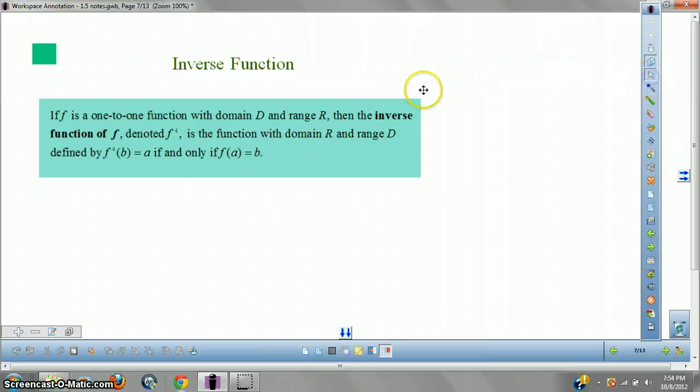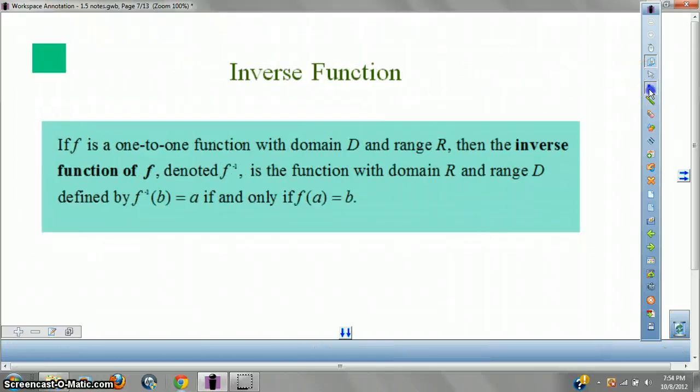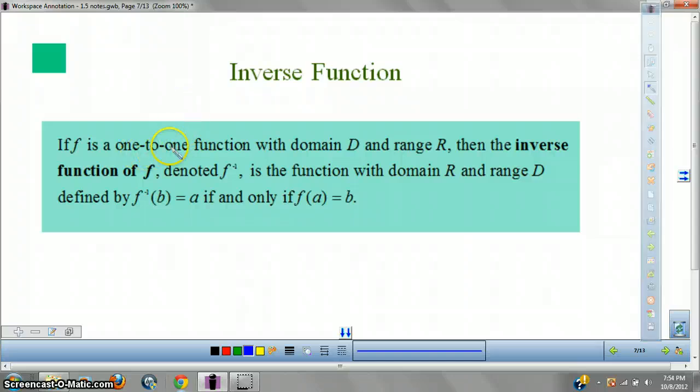Okay, an inverse function. Let me make this guy a little bit bigger. An inverse function is one to one. Or if f is one to one, with domain D and range R. One to one pretty much just means that for every X, you have exactly one Y. Then the inverse has domain R and range D. I meant f prime of B equals A only if f of A equals B.